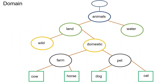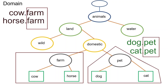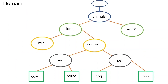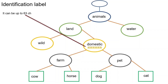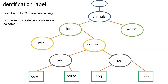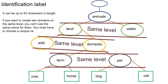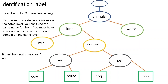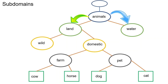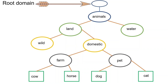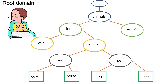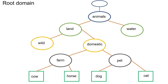A domain is a group of nodes that use the same identification label. In this example database, cow and horse are members of the farm domain, and cat and dog are members of the pet domain. An identification label is the name of a level in the hierarchy. It can be up to 63 characters in length, and if you create two domains on the same level, you must use a unique name for each. A null character cannot be used as it is reserved for the root domain. If a domain is a child of another domain, it is called a subdomain. DNS starts its hierarchy from the root domain, represented by a null label. The root domain is the topmost server in the hierarchy — it has no parent domain, while all other domains do.